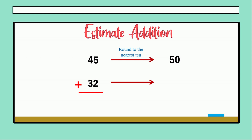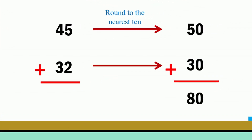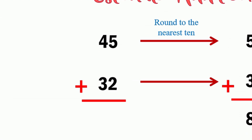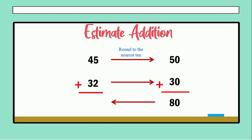Now for 32: 32 is between 30 and 40, but 32 is closer to 30, so for that reason we round to 30. Now we have to add 50 plus 30: 0 plus 0 is 0, and 5 plus 3 is 8, so the answer is 80. On the right side we have the estimation, and on the other part we will have the exact answer for this addition.